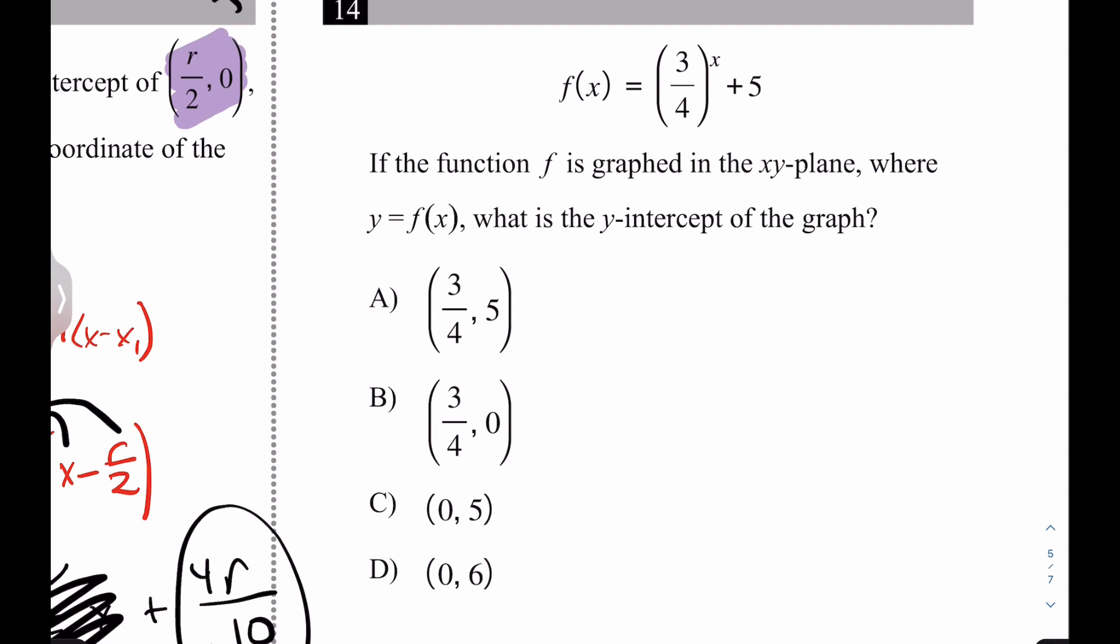So what's happening here? What is the y-intercept? Oh, well, we already talked about that. How do you find a y-intercept? You set the x to 0. So when the x is 0, this just goes to 0. Or actually, this is 0. Anything to the 0 power is 1. 1 plus 5 is 6. It's D. Okay.